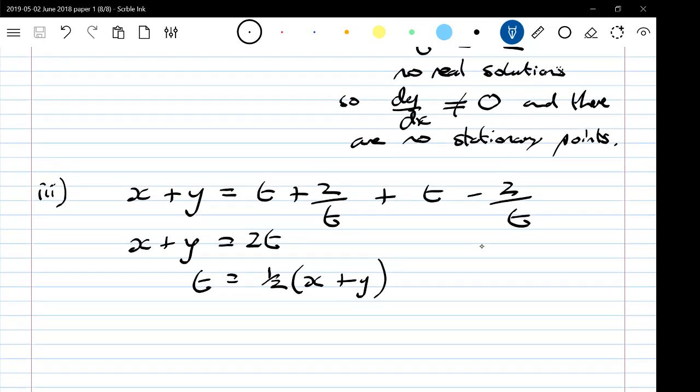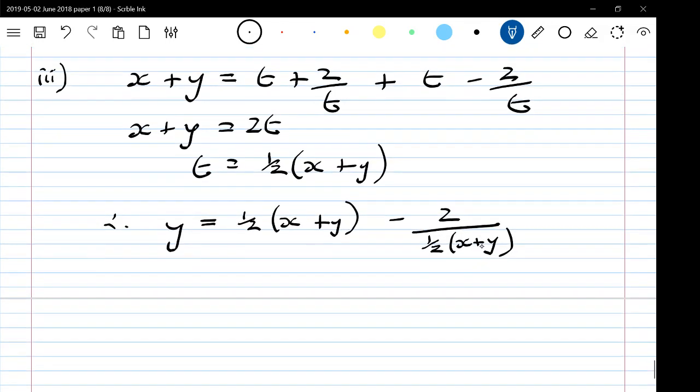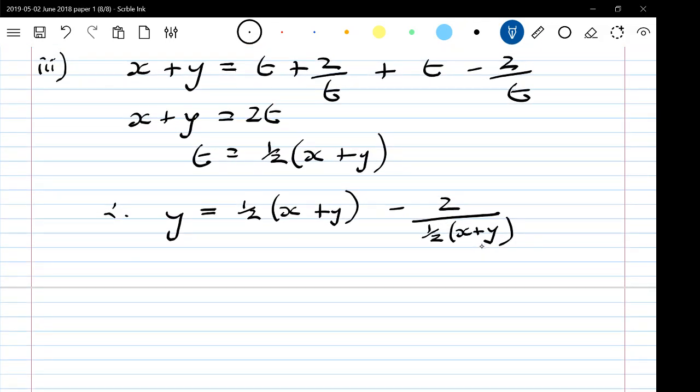So we go back to one of our equations, either of them, and we sub that in. So y is t minus 2 over t. I've now got a nice y equals equation that I can work with.